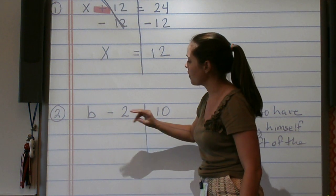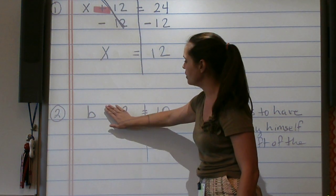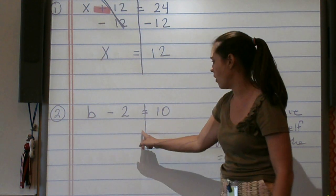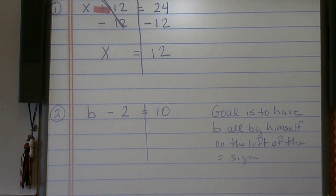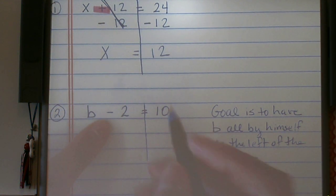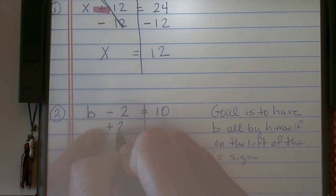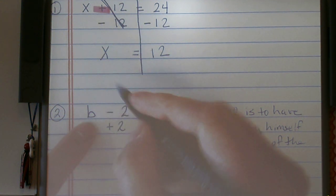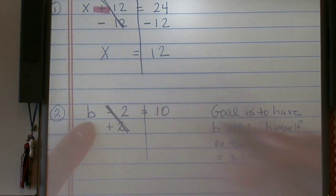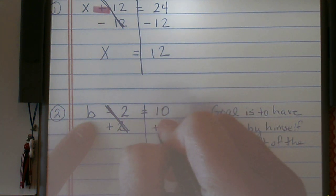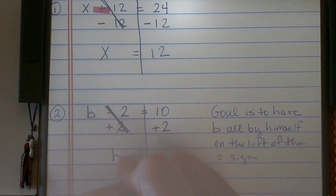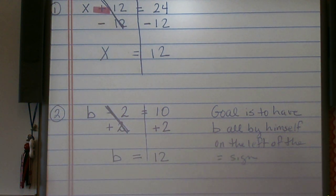So again, our inverse operations say that if we want to get rid of subtraction, we must add. So I want to get rid of the minus 2 on the left so that B is by himself. And what I do to one side, I must do to the other. So I'm going to add 2 to the right side. This will give me B equals 12.